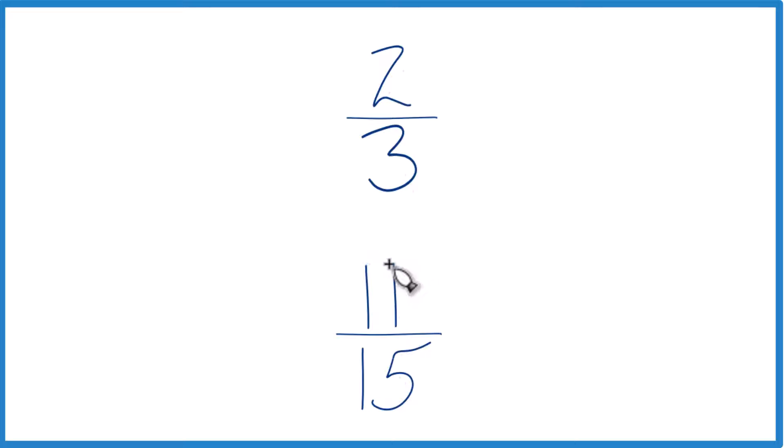You could also find a common denominator. Right now we have 15 here and 3 here. But if we could get these to be the same, find a number that they both go into evenly, we just compare the numerators and we're done. Let's try that.